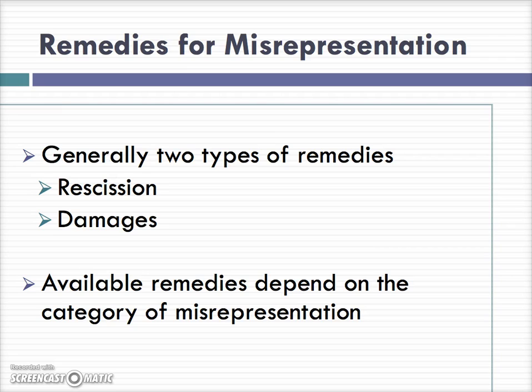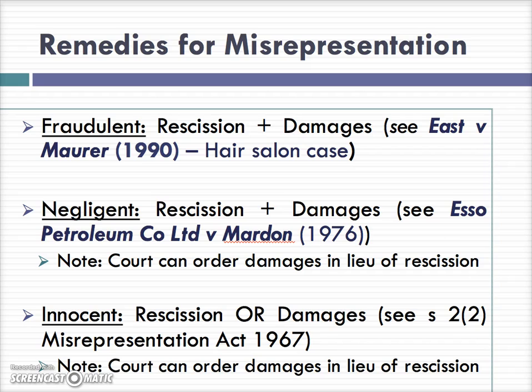Why does it matter what type of misrepresentation it is? Well, it matters because of the available remedies. Remedies vary depending on what type of misrepresentation is involved. Generally there are two types of remedies: rescission or damages. Rescission means that the parties are put back in their pre-contractual position. Damages is an award of money paid to a person as compensation for their loss. Generally, in cases of fraudulent misrepresentation, both rescission and damages are available.